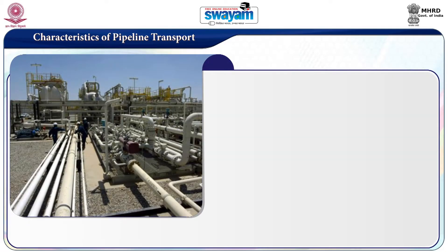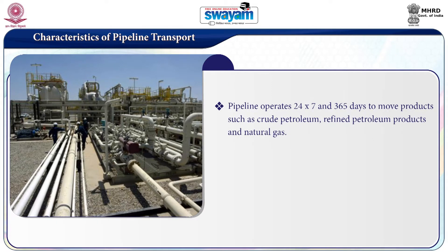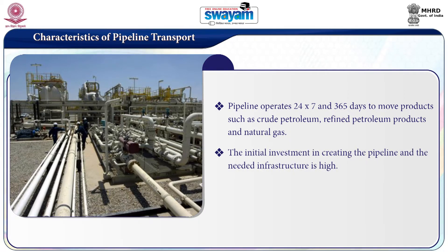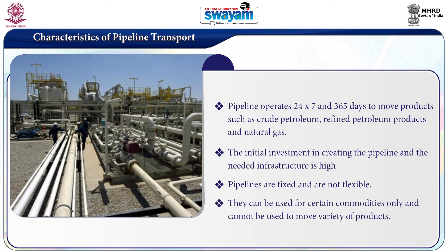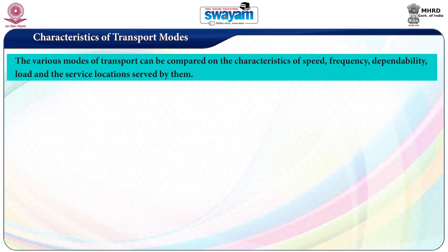The characteristics of pipeline transport: pipelines operate 24/7, 365 days, and move products such as crude petroleum, refined petroleum products, and natural gas. The initial investment in creating the pipeline and the needed infrastructure is high. Pipelines are fixed and are not flexible — they can be used for certain commodities only and cannot be used to move a variety of products.